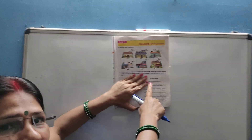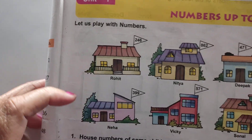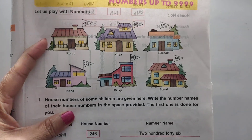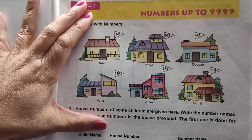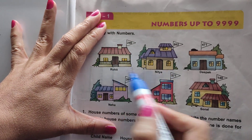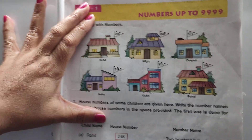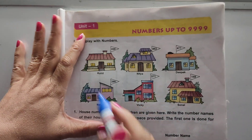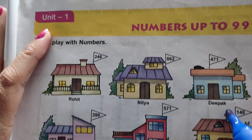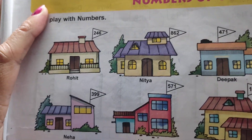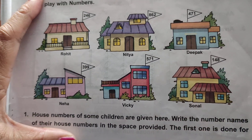Let us see in the book. Yesterday we had discussed the house numbers of Rohit, Nitya, Deepak, Neha, Vicky, and Sonal. The house number of Rohit is 246, Nitya 862, Deepak 471, Neha 399, Vicky 571, and Sonal 148.